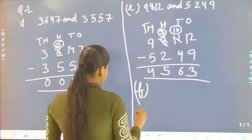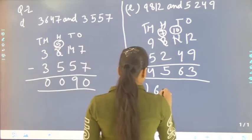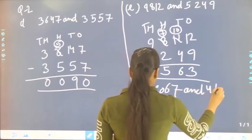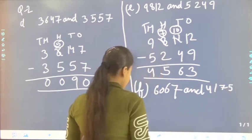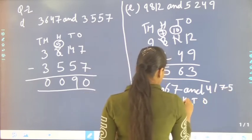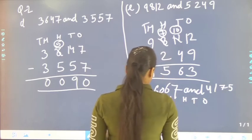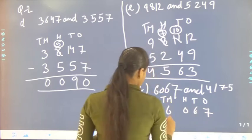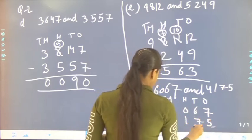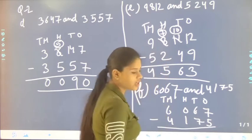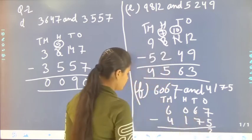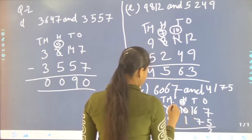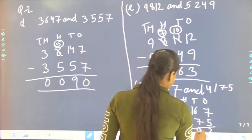Now move to the next part, that is F — 6,067 and 4,175. Again, we have to write ones, tens, hundreds, thousands. It will be 6,067 minus 4,175. 7 minus 5, it will be 2. 6 minus 7 — we have to take a borrow. 16 minus 7, it will be 9.